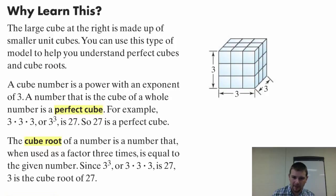A cube number is a power with an exponent of three. A number that is the cube of a whole number is a perfect cube. For example, three times three times three is three cubed, and that's 27. So 27 is a perfect cube.